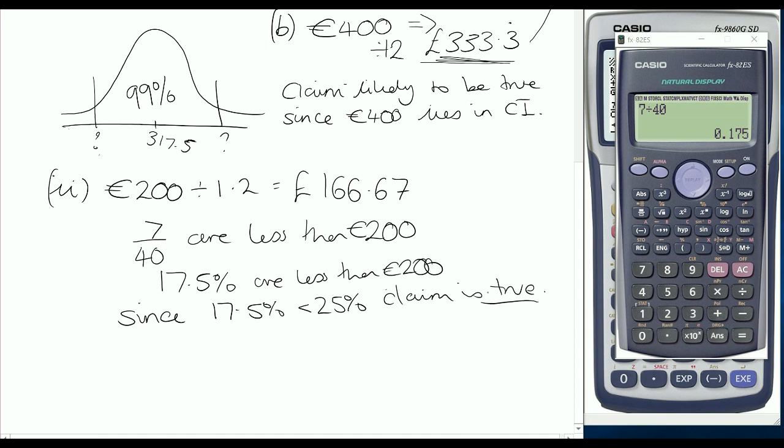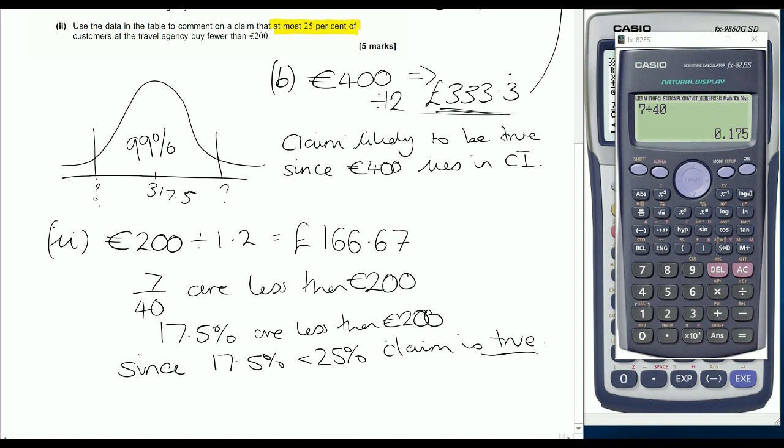That was what was required for our two marks. So if you didn't get those second two marks, just check was it because you misread that question and looked for exactly 25%.